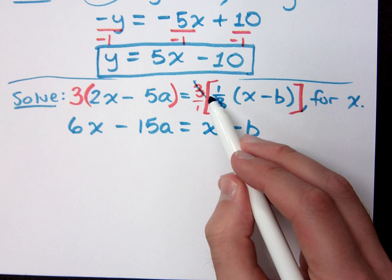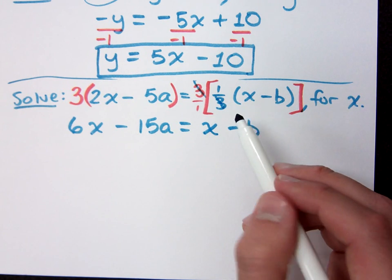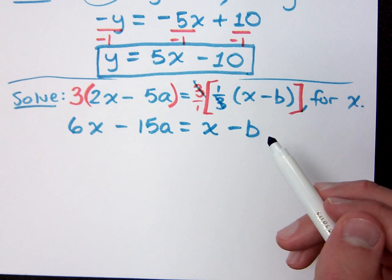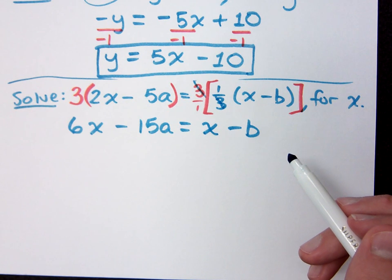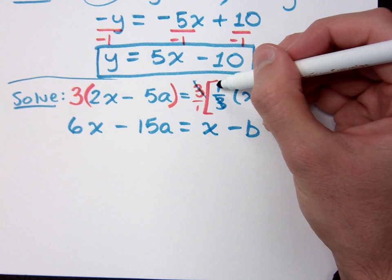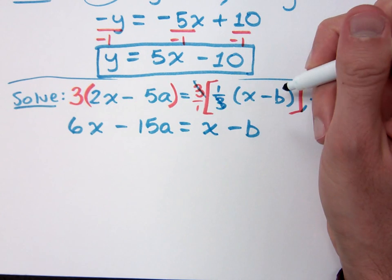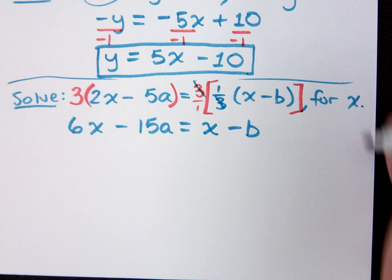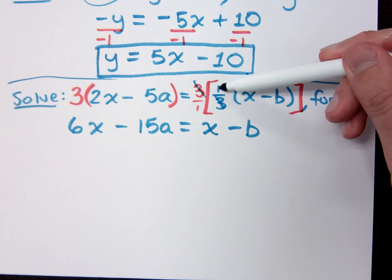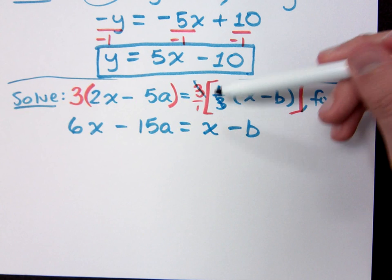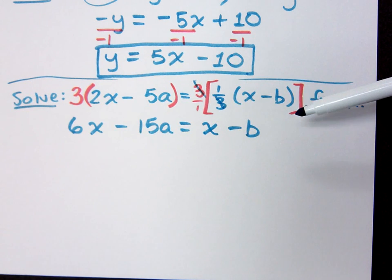You can see that as a 1 that you have to distribute. But if you distribute a 1, does that really matter? It's just x minus b. Had this numerator been a 2, the 3s would have reduced, but you still would have had a 2 to distribute. Now, I need to get x by itself, so what do I do there?